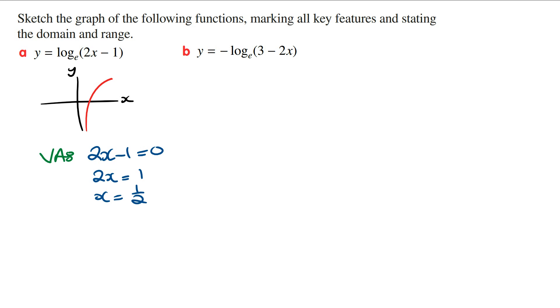Next we need to work out the x and y intercepts. Since the line x equals positive one half is the vertical asymptote and the shape of the graph is going in the positive x direction, there cannot be a y intercept.